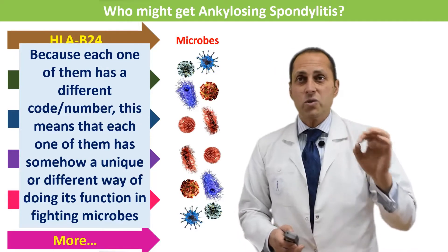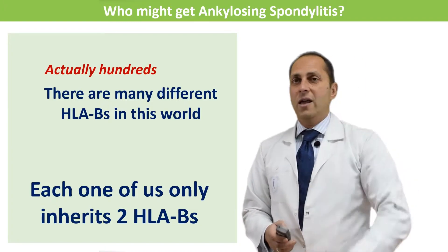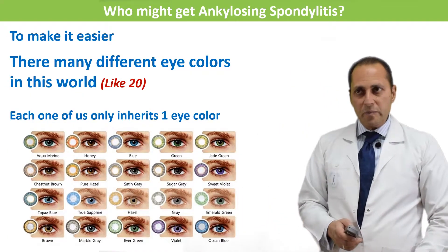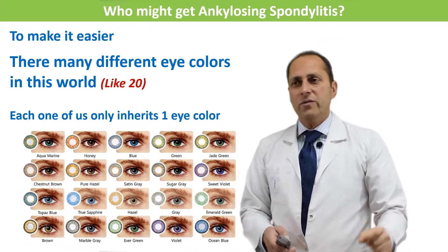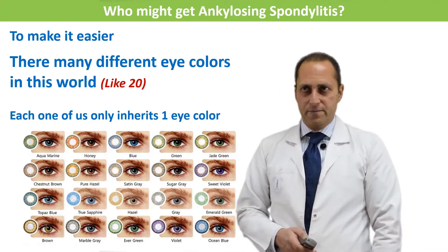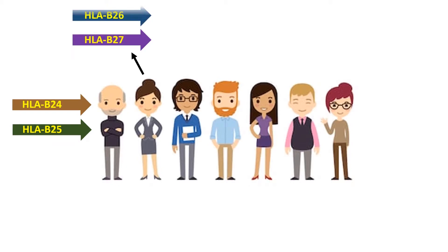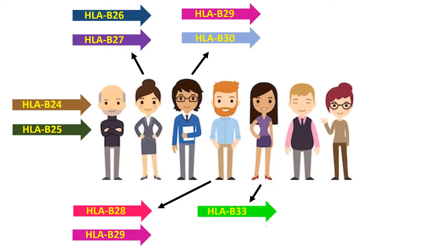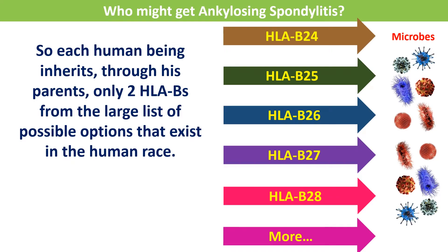There are many different HLA-Bs in this world — actually hundreds. Each one of us only inherits two HLA-Bs. To make it easier: there are many different eye colors in this world, likely 20 different eye colors, but each one of us only inherits one eye color. Like those seven individuals shown: this guy has HLA-B24 and B25, this lady has B26 and B27, the next has B29, B30, B28, B29, B33, B34, B25, B28, B30, B31, and so on.